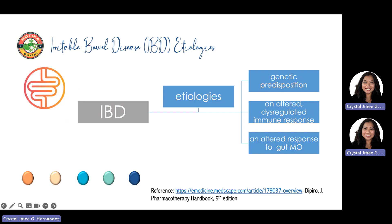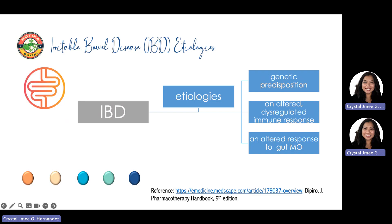Specific genes associated with Crohn's disease include CARD15, from chromosome 16 also known as the IBD1 gene, which led to the identification of three single nucleotide polymorphisms — two missense and one frameshift — in the NOD2 gene. CARD15 is a polymorphic gene involved in the innate immune system with more than 60 variations, of which three play a role in 27% of patients with Crohn's disease, primarily in patients with ileal disease. For ulcerative colitis, the genetic predisposition appears to be lesser in magnitude than Crohn's disease.